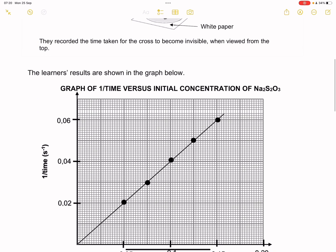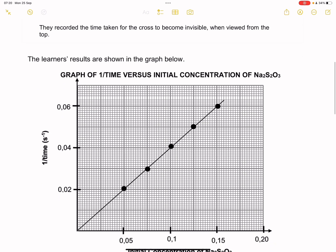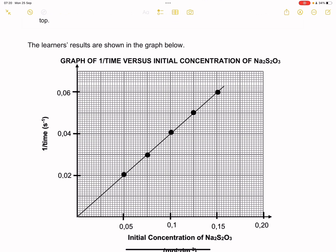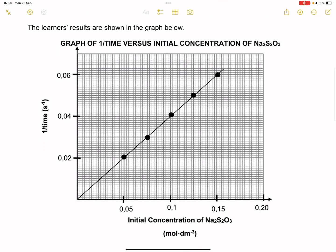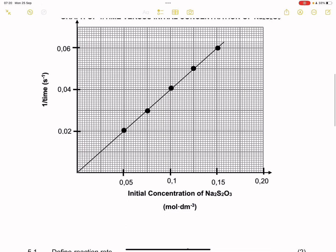The learners' results are shown in the graph. In our graph we've got the inverse of time on one axis and the initial concentration on the other. So it means that they actually keep changing the concentration and measuring what happens to the inverse of time.